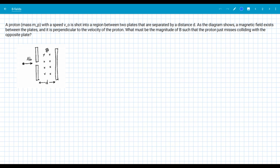So the question here is what must be the magnitude of b such that the proton just misses colliding with the opposite plate? So what we want is we want the proton to take, if it's going to just miss the opposite plate, then the most efficient path would be like a circular path, kind of like that.